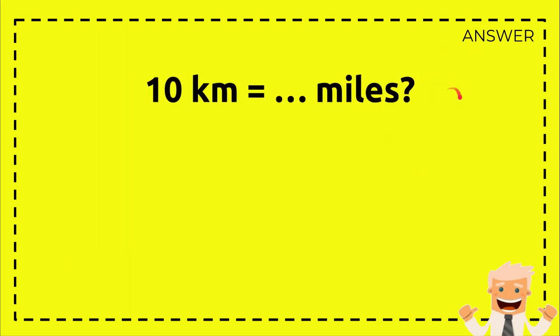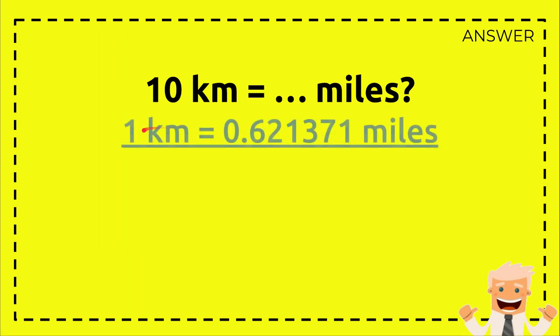First, just write down the question again. 10 km equals how many miles? And then we write again the formula. 1 km equals 0.621371 miles.